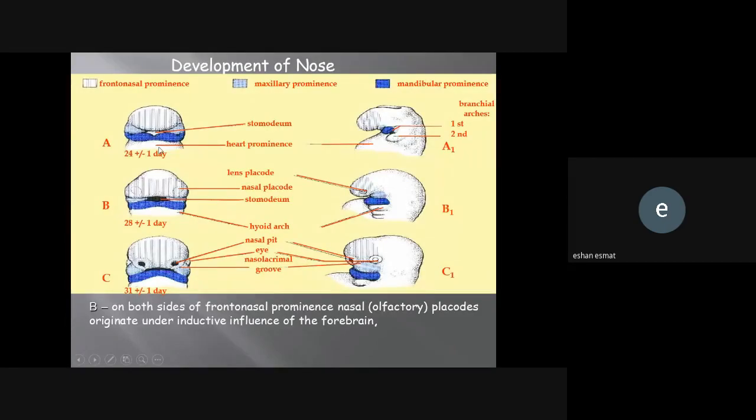Also, the development of the nose: you can see here, this is the stomodium, here they will start heart formation. These are the first and second branchial arches, the frontal nasal prominence in this color. On both sides there's the maxillary prominence and the mandibular. You look from here: mandible, maxilla, and frontal nasal prominence. You see by the time how it will change.